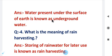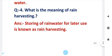Question four is: What is the meaning of rain harvesting? Rain harvesting ka meaning kya hai? Answer is: Storing of rainwater for later use is known as rain harvesting. Rainwater ko store karna means collect karna, so that hum uska baad mein use kar sakein. Later use means baad mein hum usko use kar sakein.